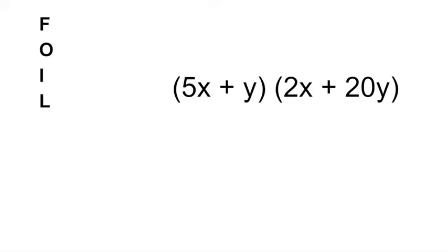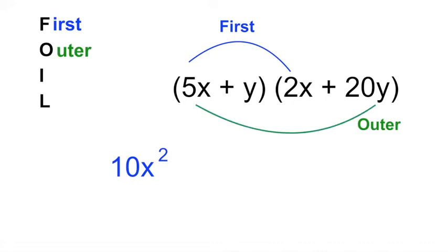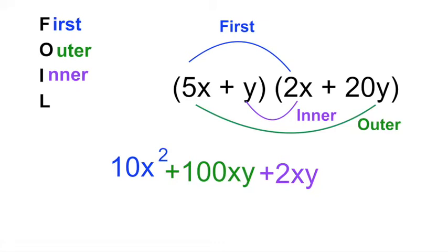The FOIL method says that when you have to simplify an expression, first you multiply the first numbers together. In this case it would be 5x times 2x, which gives you 10x². Then the O stands for outer, so you multiply the outer numbers together. In this case it's 5x and 20y, which gives you 100xy. The I stands for inner. The inner expressions are y and 2x, which gives you 2xy. And finally, last. That would be y times 20y, which gives you 20y².